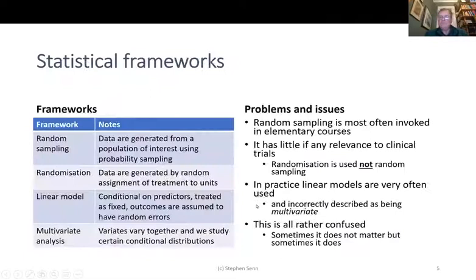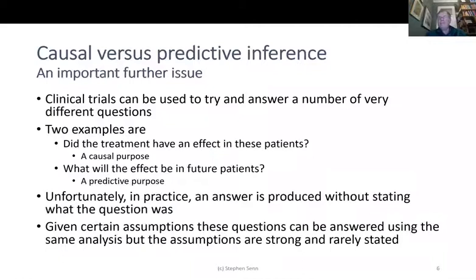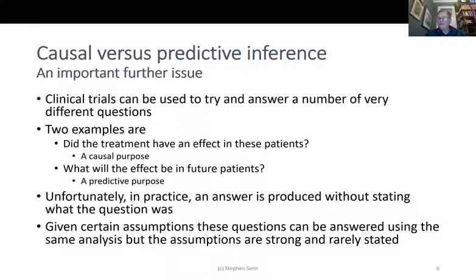There's a further important issue: we may sometimes be interested in causal inference and sometimes in predictive inference. Examples of questions clinical trials can answer: 'Did the treatment have an effect in these patients?' — a causal purpose. 'What would the effect be in future patients?' — a predictive purpose. People sometimes assume the first question is simple, but it's not — it's a matter of making an inference about what actually happened to the patients in the trial. How often do you find an author saying whether they are answering a causal or a predictive question? They hardly ever say this.